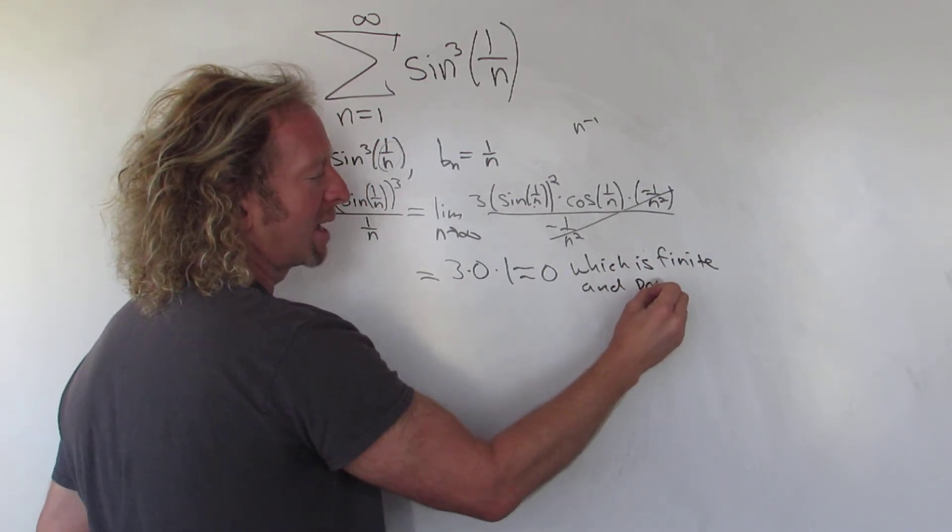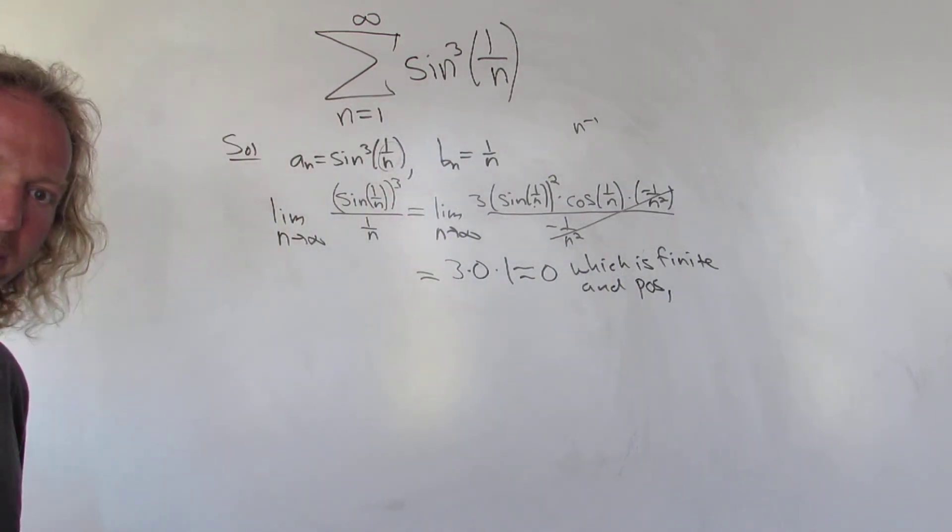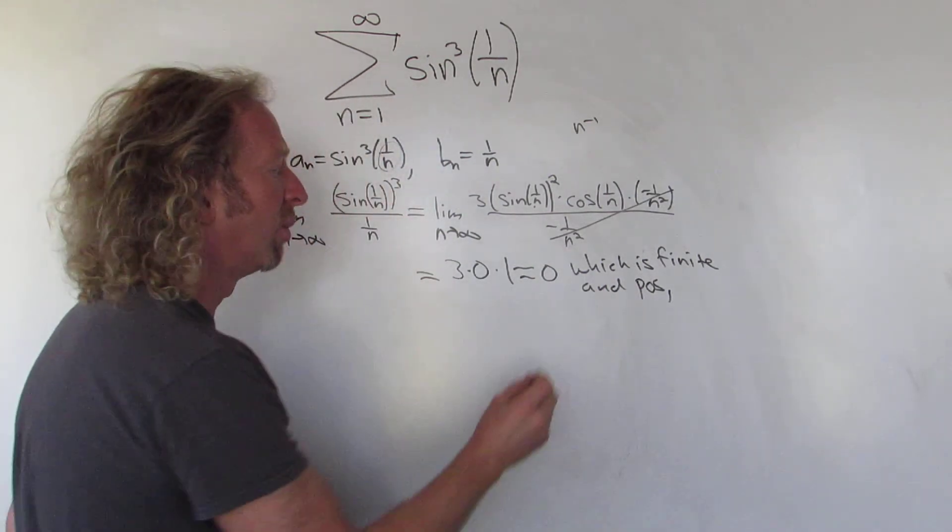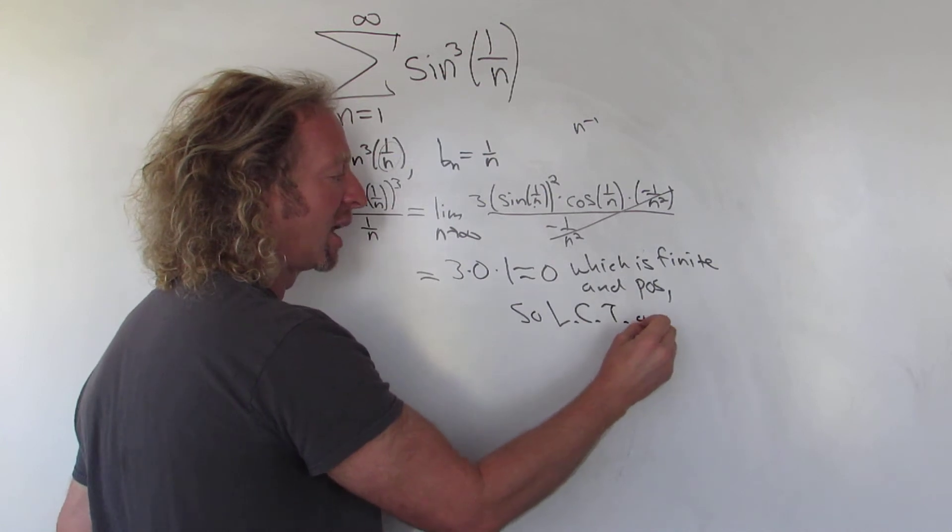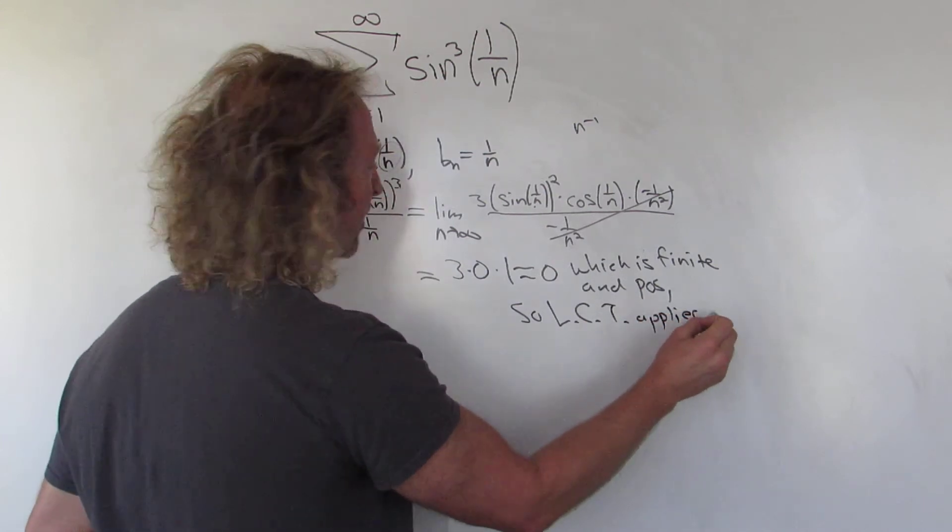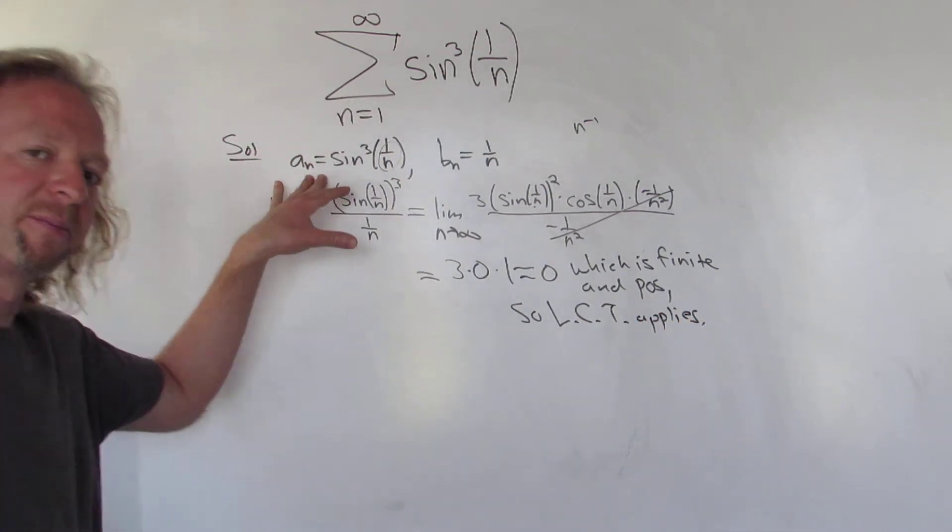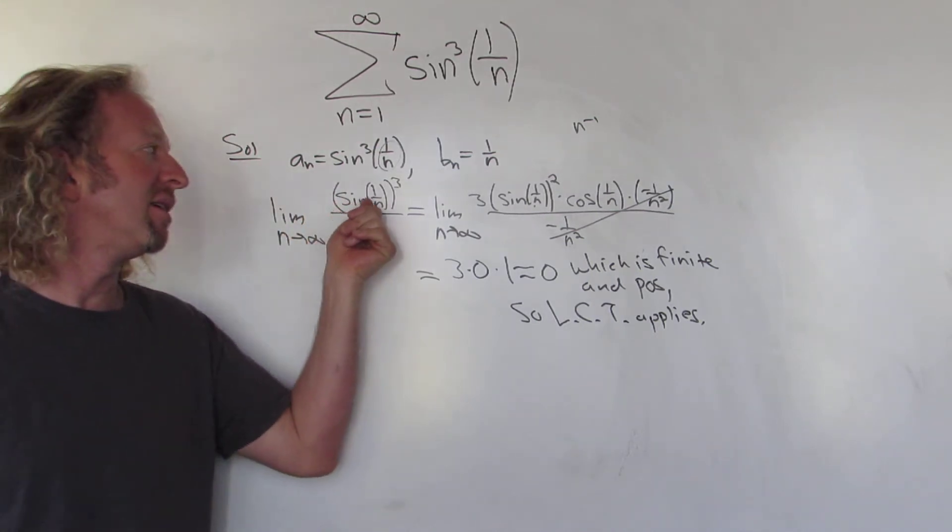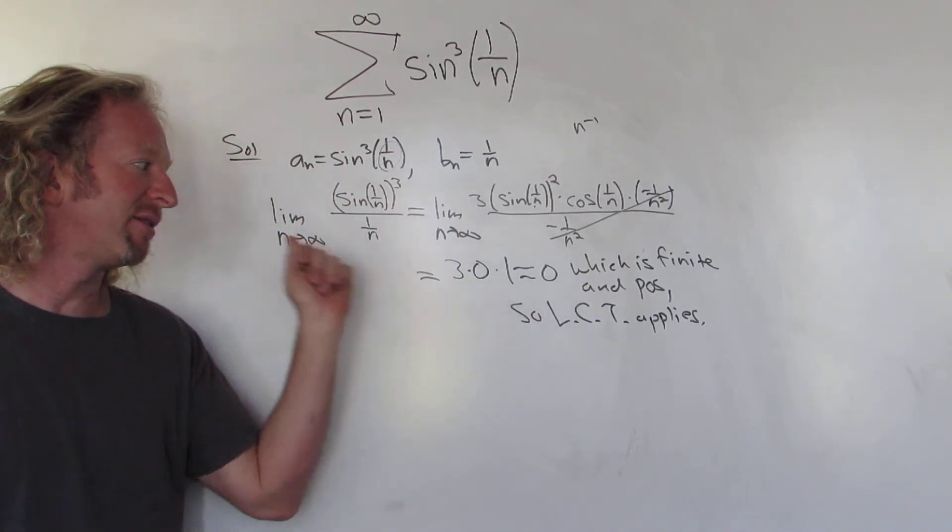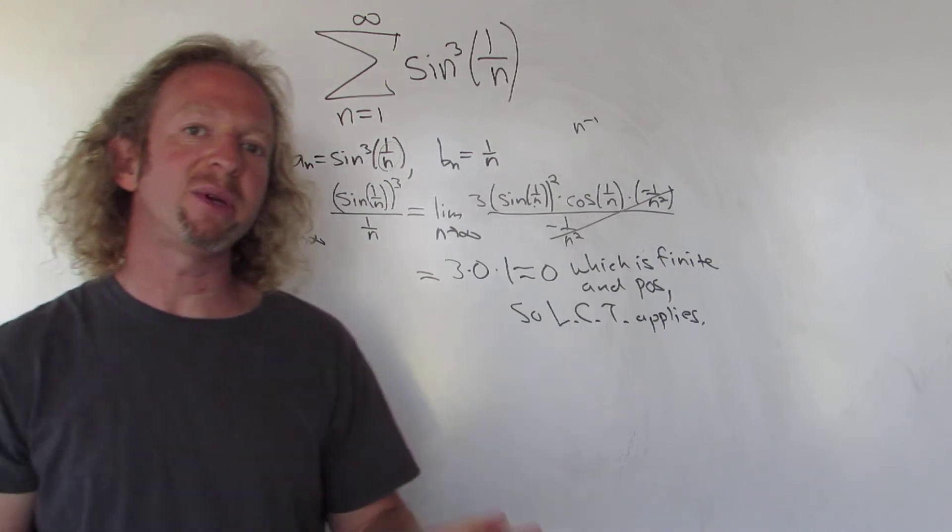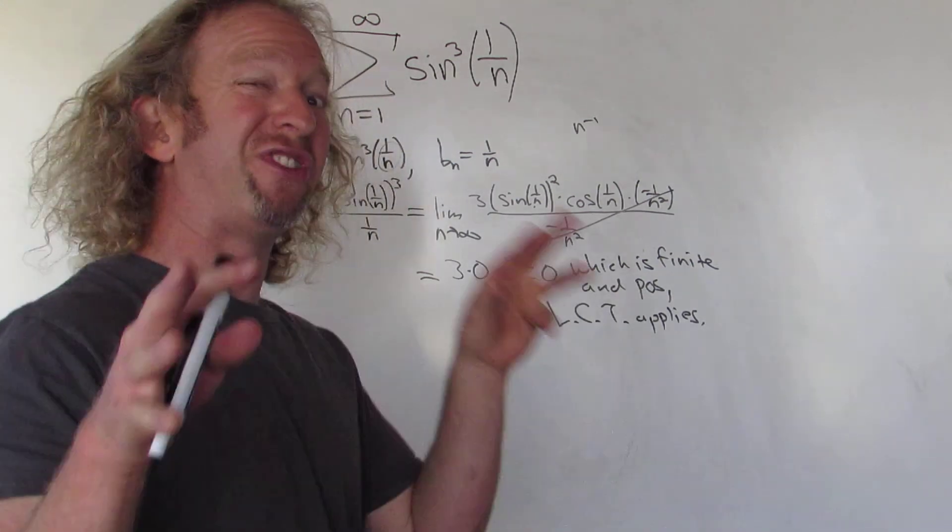And why am I writing that? Because that's what it means for the limit comparison test to apply. So the limit comparison test, I'll call it LCT, applies. So limit comparison says the following: if you take this limit, okay, and you get an answer that's positive and finite, both series will either converge or they'll both diverge.